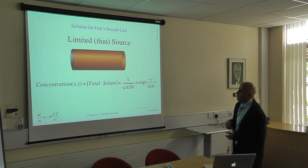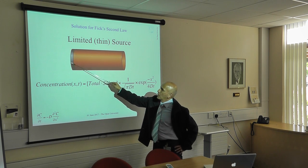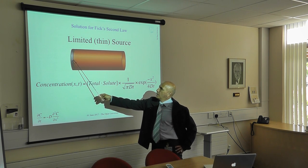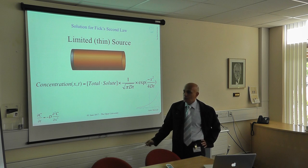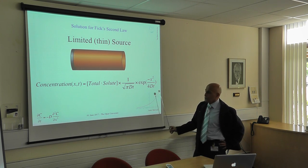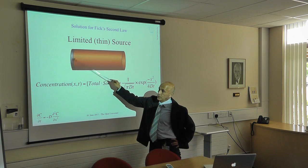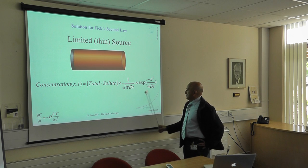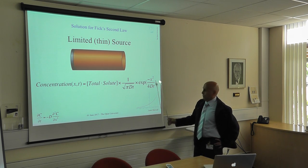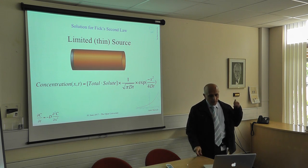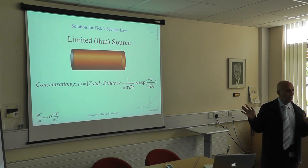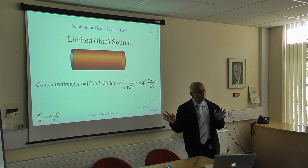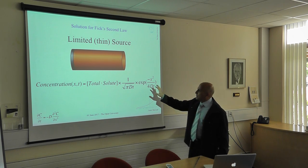One application is that you have a very large bar with a very small amount of material at one end — you heat it up and let it diffuse inside the material. If you solve Fick's second equation, you end up with this solution. This is the general solution: the total solute, which is constant, depends on the diffusion coefficient, time, and distance. In order to truly understand the equation, we have to look at it more carefully.